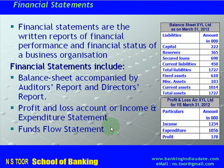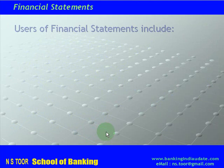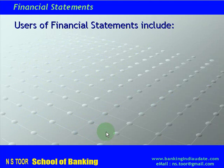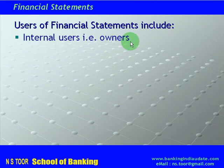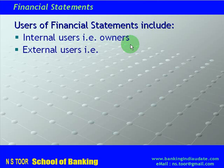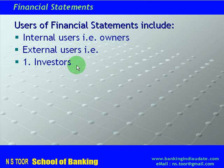In addition, there can be a financial statement called funds flow statement that provides sources and uses. Now, who uses financial statements? There are two categories of users. One: internal users — that is owners, promoters, and partners. Second: external users, and there are different categories of external users. One could be investors — those who make investment in the business organization.